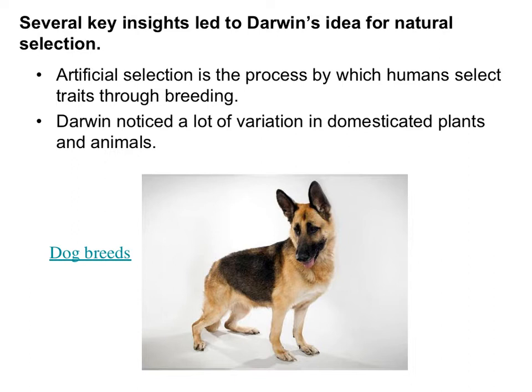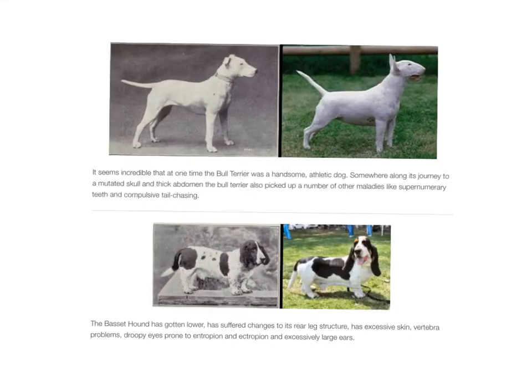Another thing that led to Darwin's idea for natural selection was that he knew artificial selection was already happening. Humans were able to select traits through breeding, like in dogs, and were able to create certain fruits and vegetables through breeding desirable traits in plants.